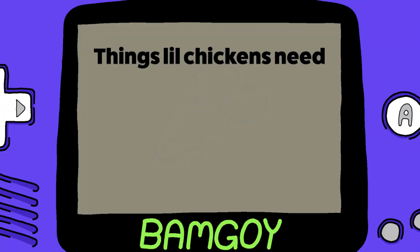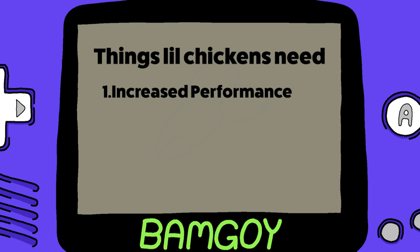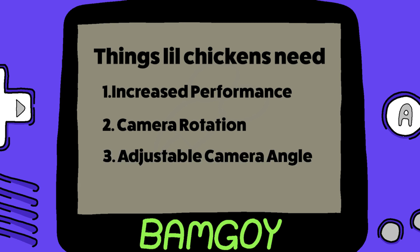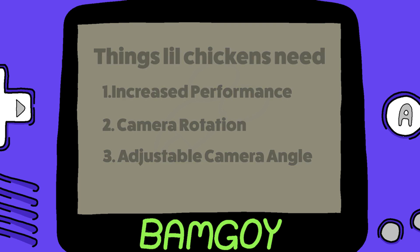So here are the 3 things you need. Number 1: increase performance so you don't get review bombed by 12-year-olds playing on a low-end PC. Number 2: camera rotation to justify the whole thing. Number 3: an adjustable camera angle so you can lord it over people when you make your own badly recorded YouTube tutorial.